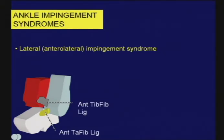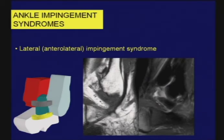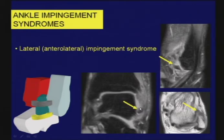The next quadrant touted as a site of pathology producing impingement is the anterolateral quadrant of the ankle. Here the dominant players are the anterior tibiofibular ligament and, somewhat lower down, the anterior talofibular ligament. Extending from the tibiofibular level to the talofibular level is a gutter, sometimes called the anterolateral gutter of the ankle joint. It is suggested that fibrosis deep to a chronically injured ligament may lead to anterolateral impingement syndrome. A patient who had anterolateral ankle impingement showed scar tissue right at the joint line, within the anterolateral gutter.